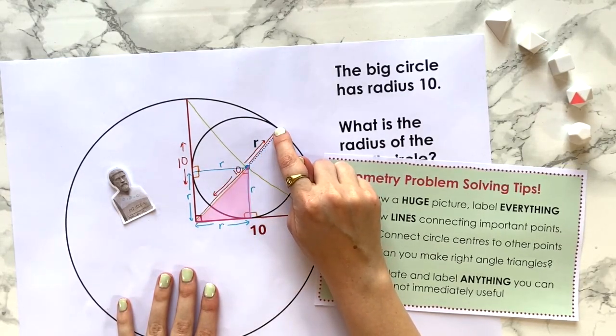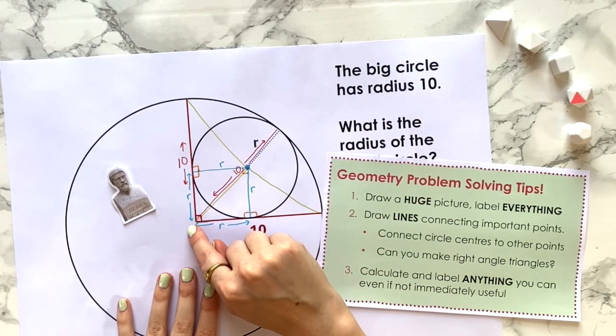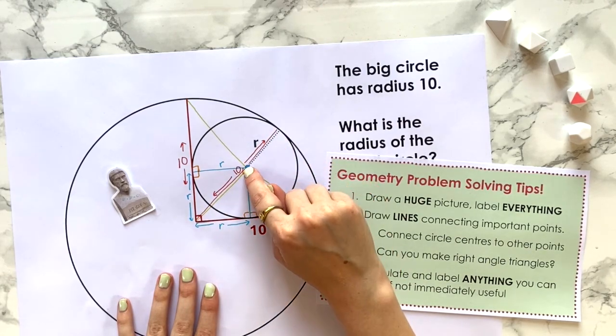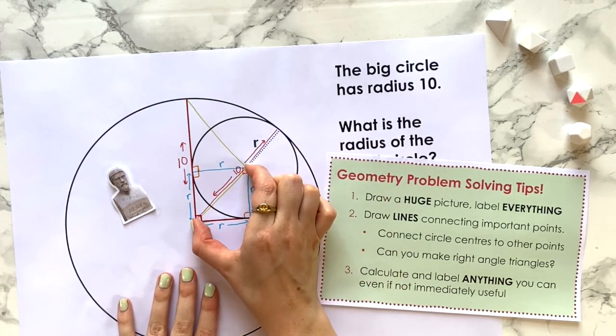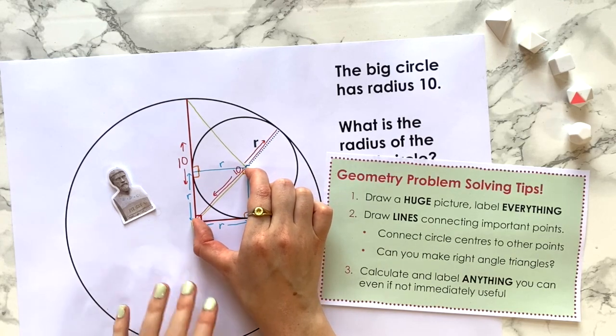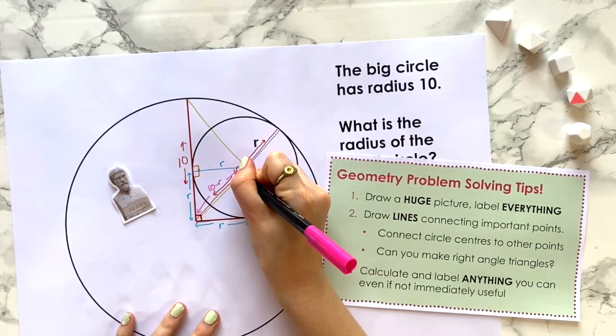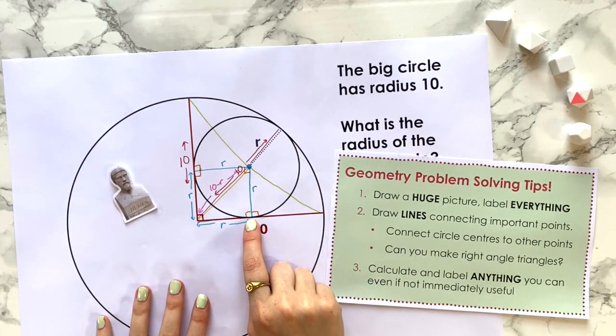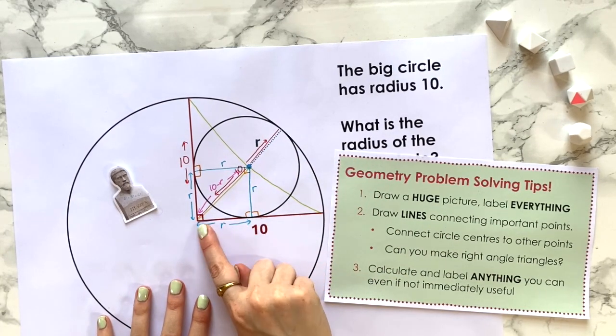We know this length because this is a radius of the small circle. So we have 10 minus r equals this length. So this length is 10 minus r. This is really exciting because we actually know three sides of this triangle in terms of r.